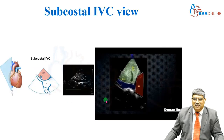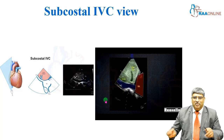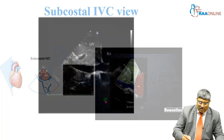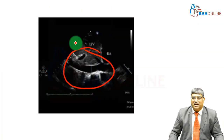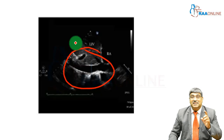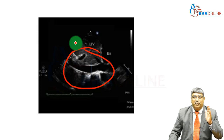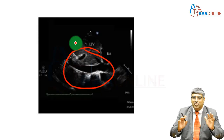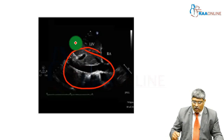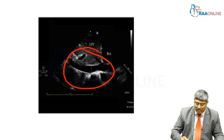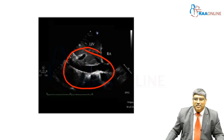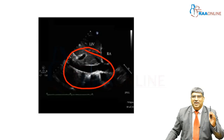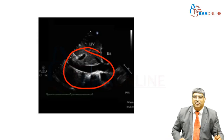Next comes the subcostal view for the IVC diameter. Assessing the volume and preload of the heart, this view is very, very important. All you do is measure the IVC diameter and the collapsibility index of the inferior vena cava.